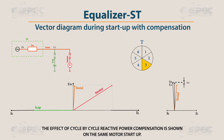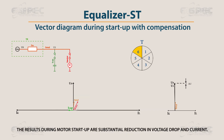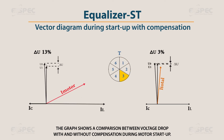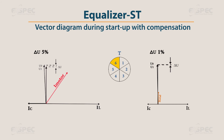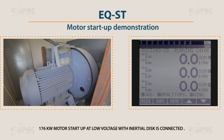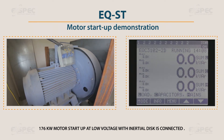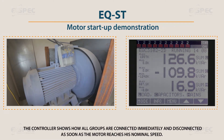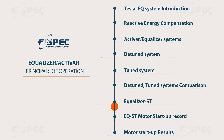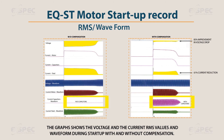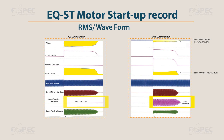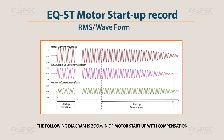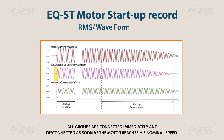The effect of cycle-by-cycle reactive power compensation is shown on the same motor startup. The results during motor startup show substantial reduction in voltage drop and current. The graph shows a comparison between voltage drop with and without compensation during motor startup, resulting in substantial improvement. The next demonstration is a 176-kilowatt motor startup at low voltage with an inertial disk connected. The controller shows how all groups are connected immediately and disconnected as soon as the motor reaches its nominal speed.